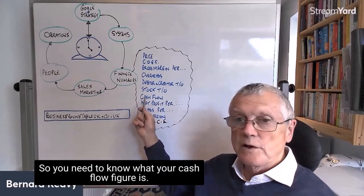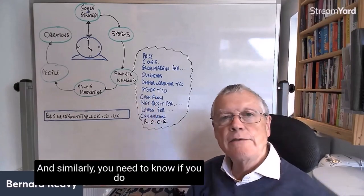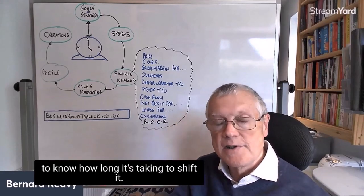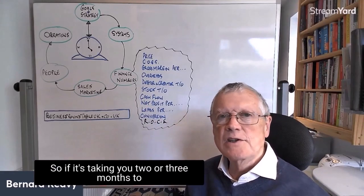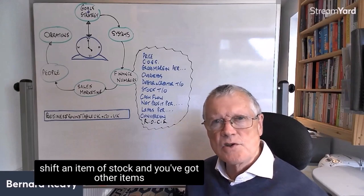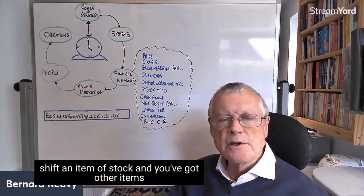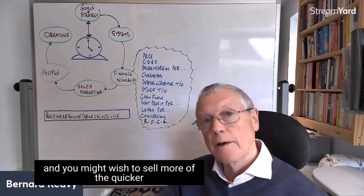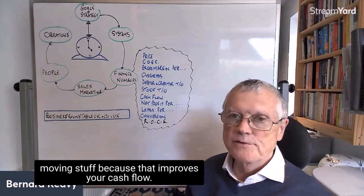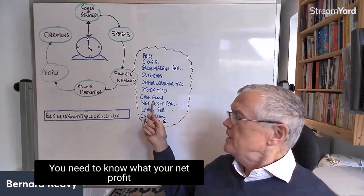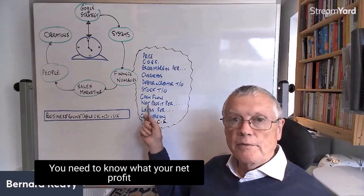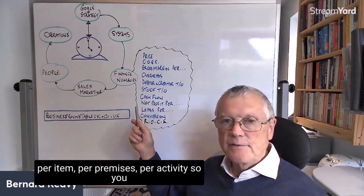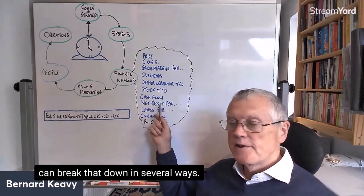So you need to know what your cash flow figure is, and similarly, if you do sell stock of any sort, any product, you need to know how long it's taking to shift it. If it's taking you two or three months to shift an item of stock and you've got other items of stock that you're shifting in two or three weeks, you might wish to sell more of the quicker-moving stuff because that improves your cash flow. You need to know what your net profit per item, per premises, per activity — so you can break that down in several ways.